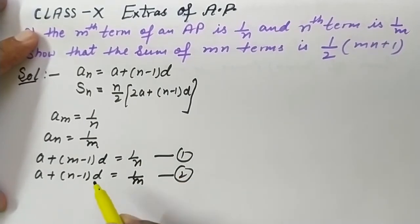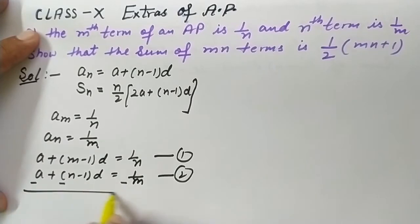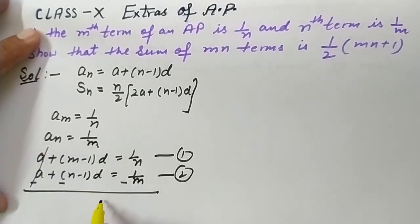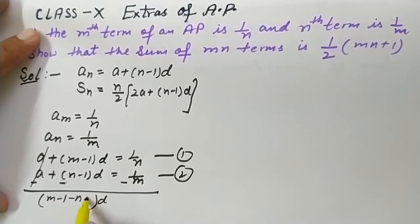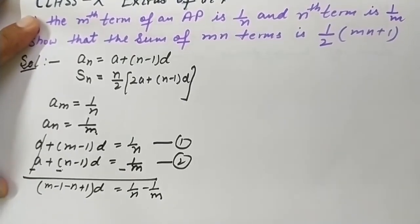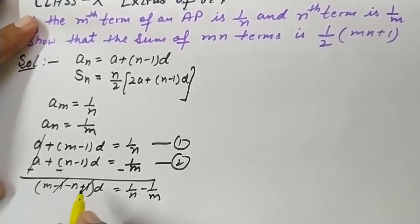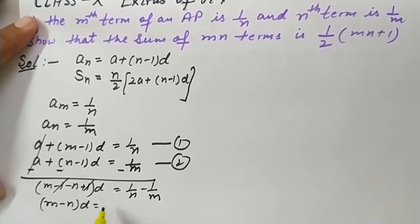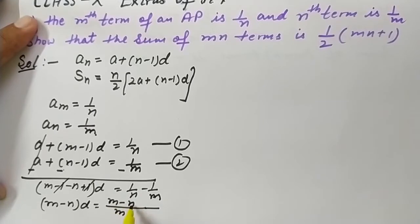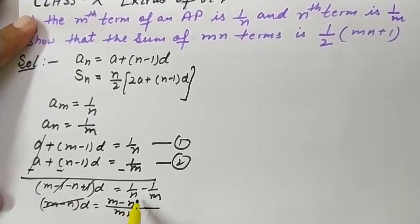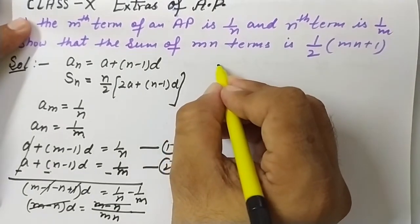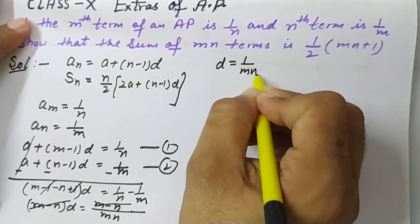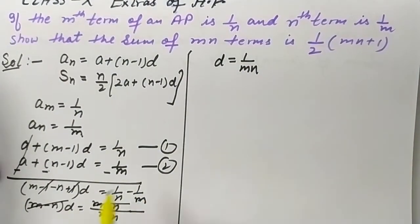Subtracting equation 2 from equation 1: 'a' and 'a' cancel. Taking 'd' common, we get (m - 1) - (n - 1) = m - n on the left side. On the right side, 1/n - 1/m. The -1 and +1 cancel, leaving (m - n)d = (m - n)/mn. Since the numerators on both sides are the same, they cancel, giving d = 1/mn.